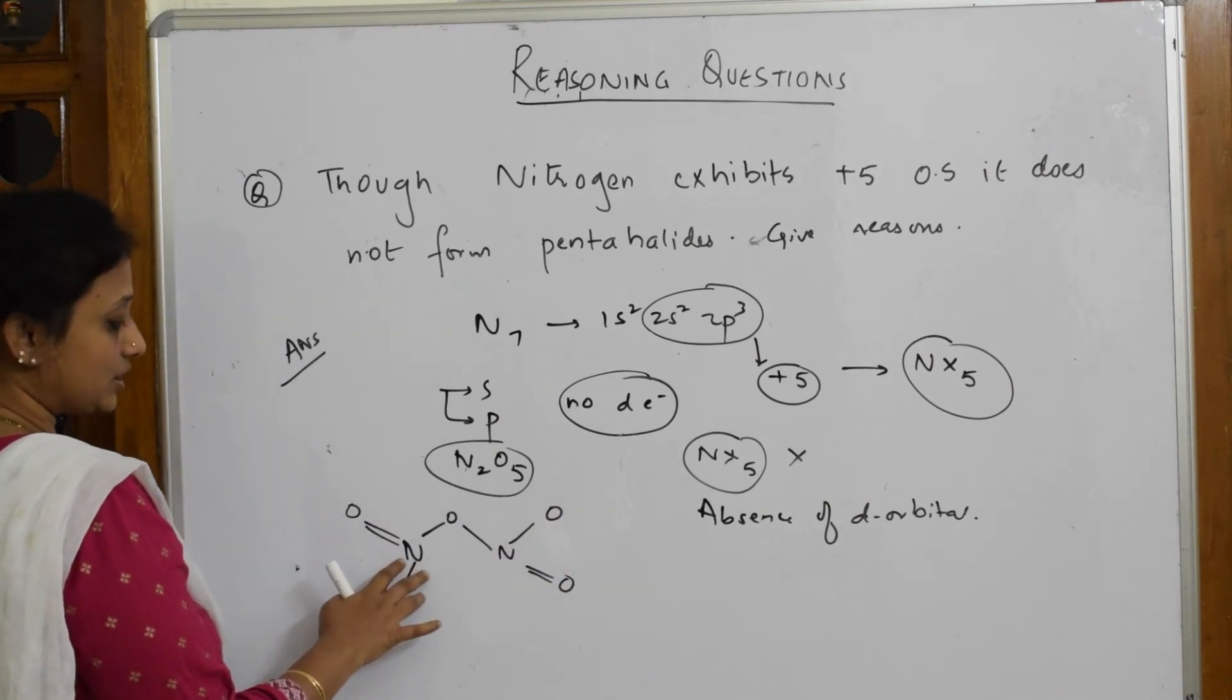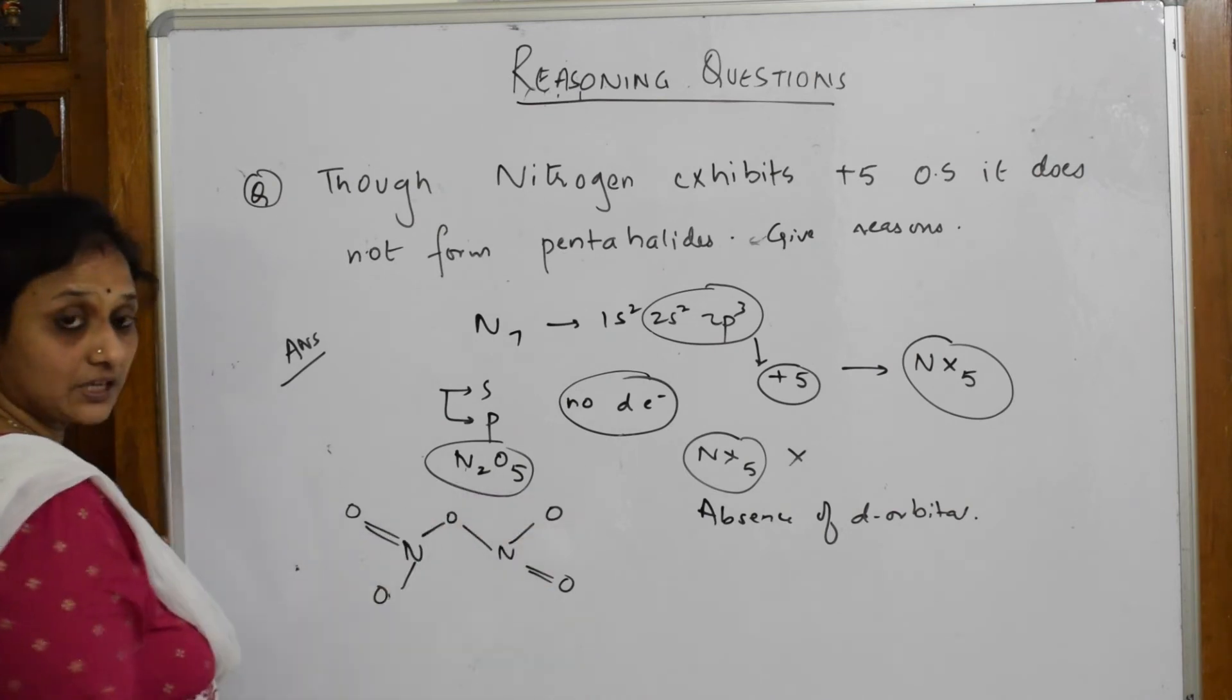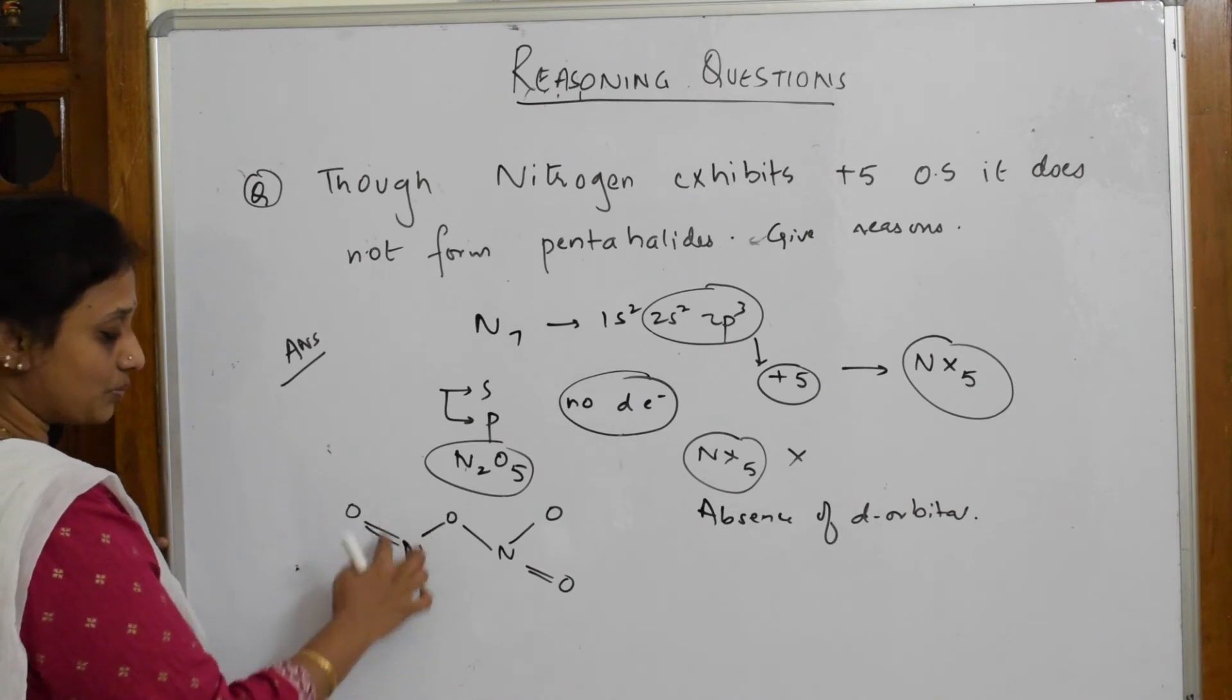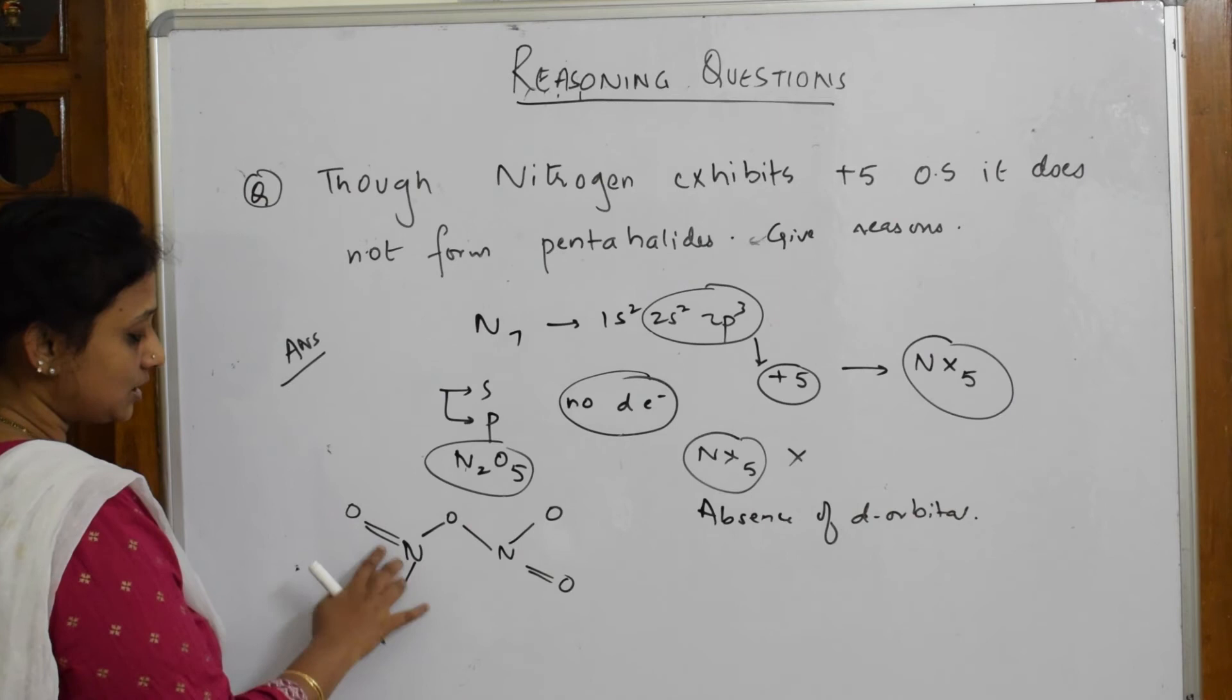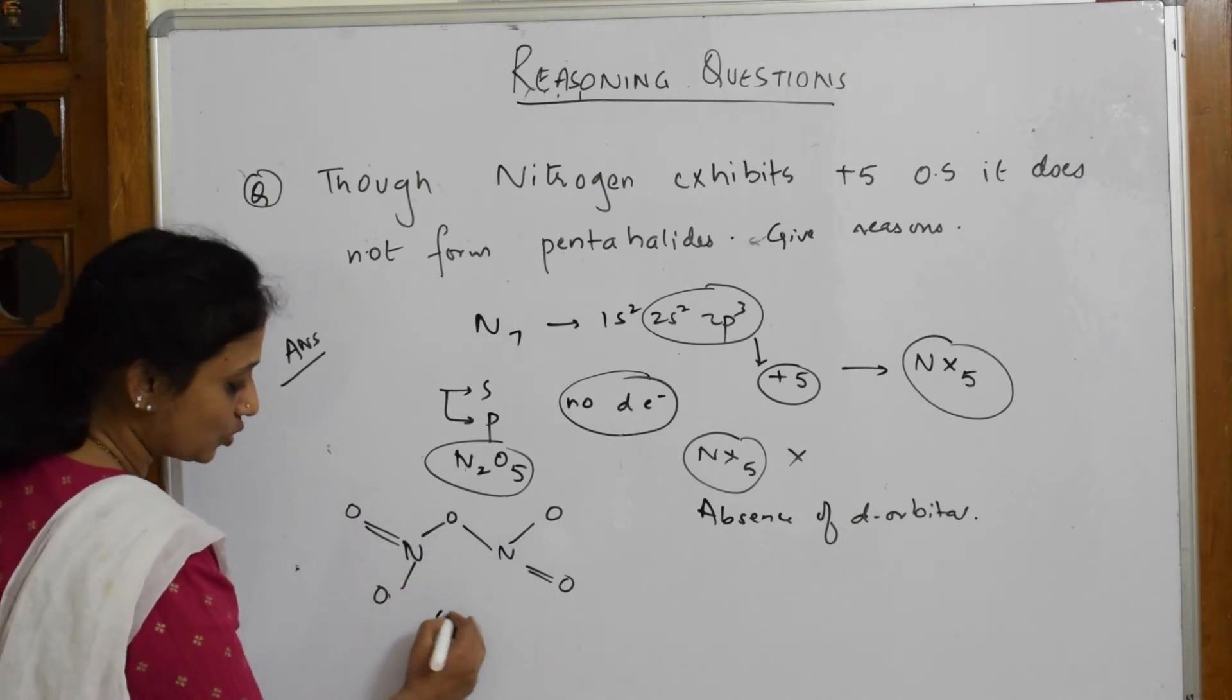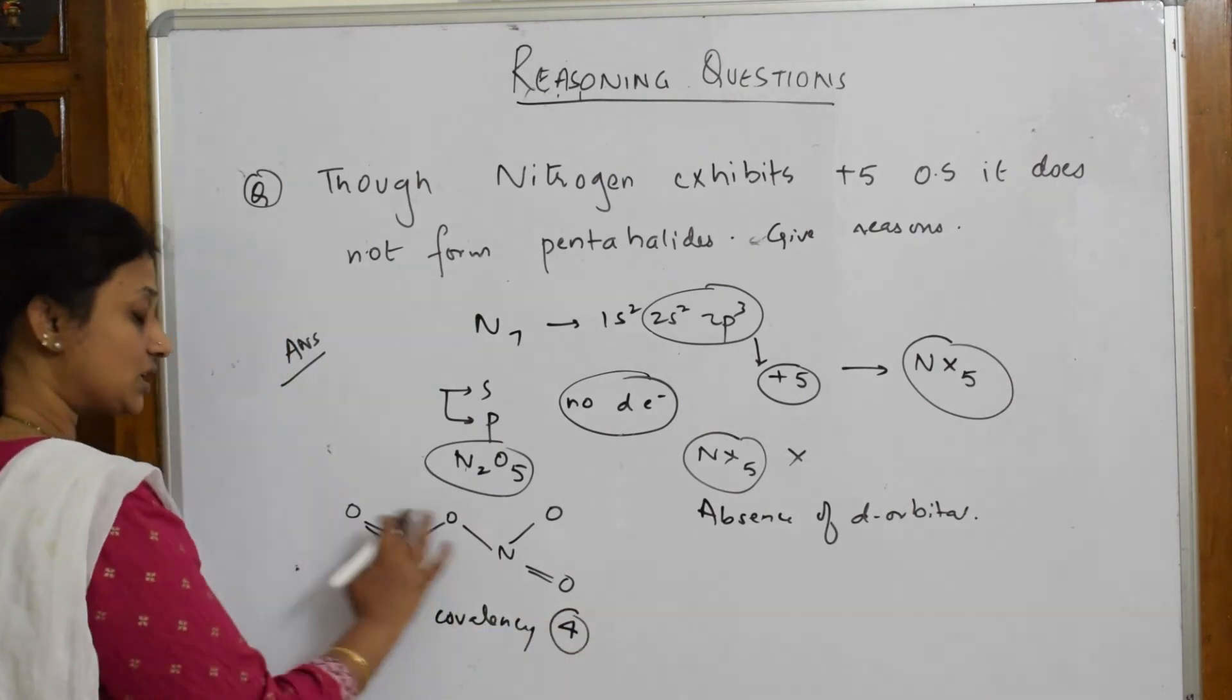In this particular compound nitrogen, let's see whether the formula is correct - N₂O₅, correct. Around this nitrogen, what is the covalency? Covalency means how many bonds it forms. Here, nitrogen has one, two, three, four bonds. For this nitrogen, one, two, three, four. So the covalency is only four.